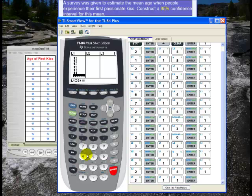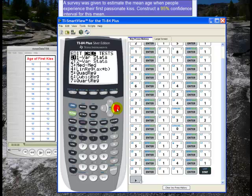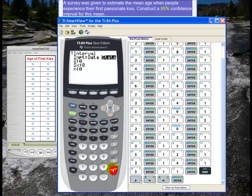And I'm done entering the data so now I hit STAT again and I go to TESTS and I scroll down to get to T INTERVAL. That's because I don't know the standard deviation for the population. T INTERVAL is number 8 and I hit ENTER.